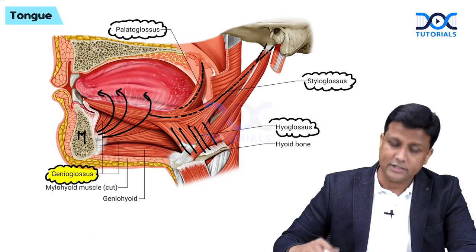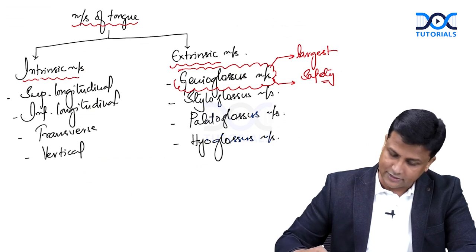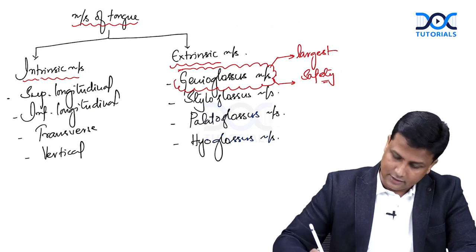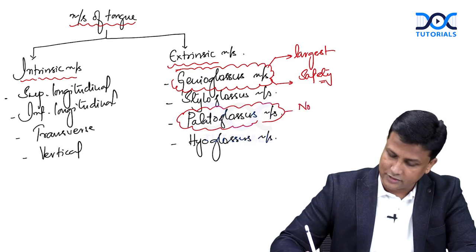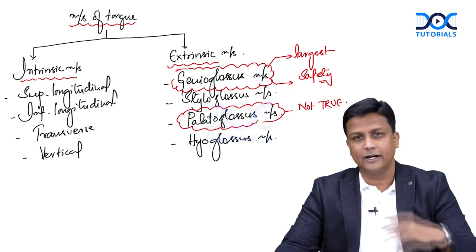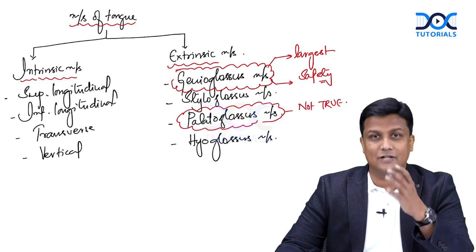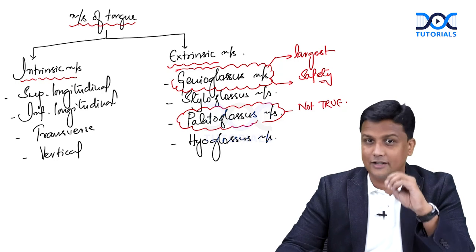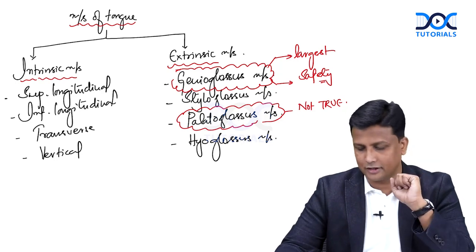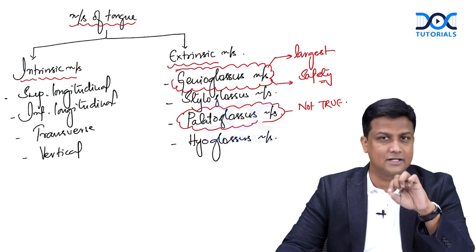One more important exam question: which is not a true muscle of the tongue? You can easily remember this from the name itself — palatoglossus. Palatoglossus is not a true muscle of the tongue. From the name itself, you can see it is a muscle of both the palate and the tongue, so it is not purely or exclusively a muscle of the tongue.